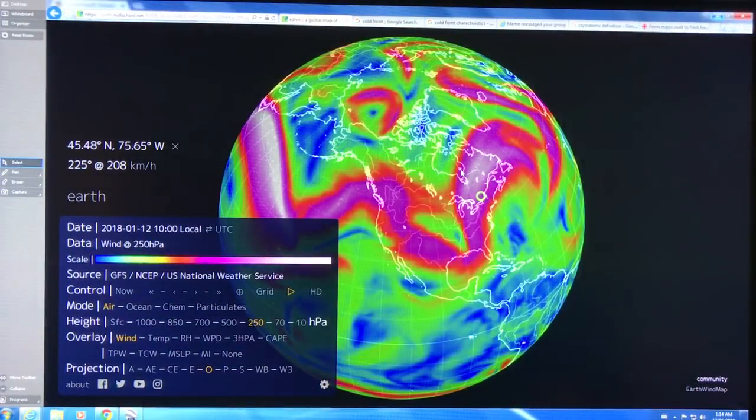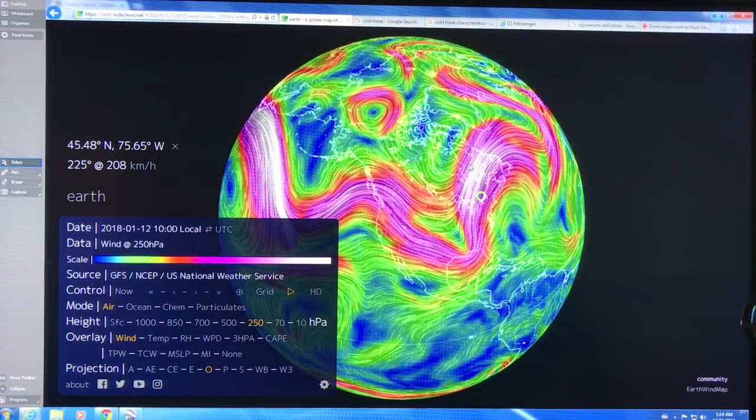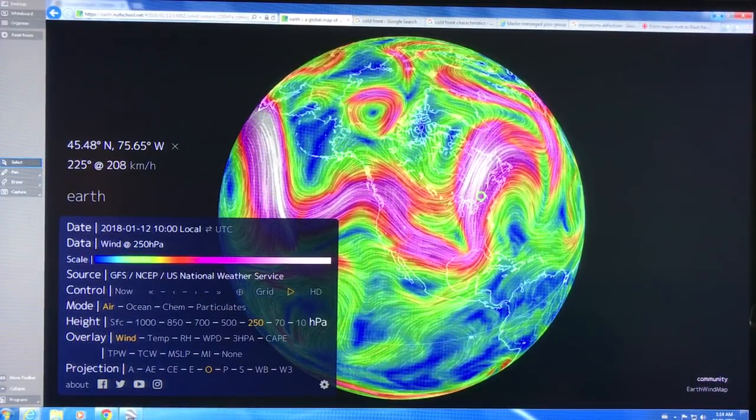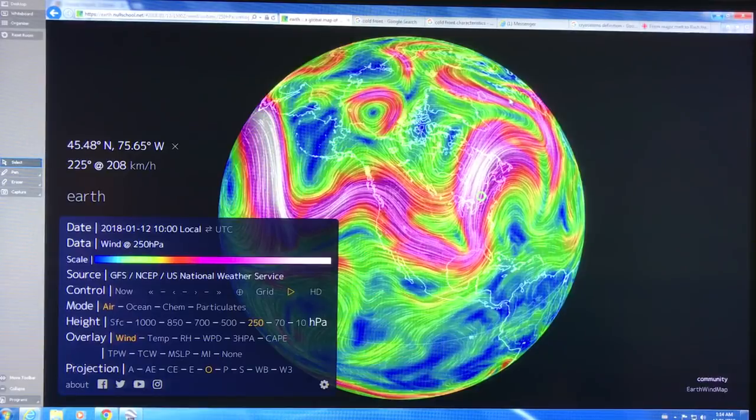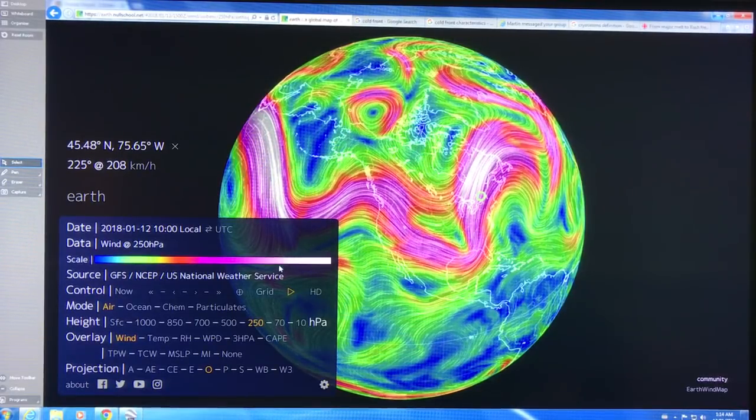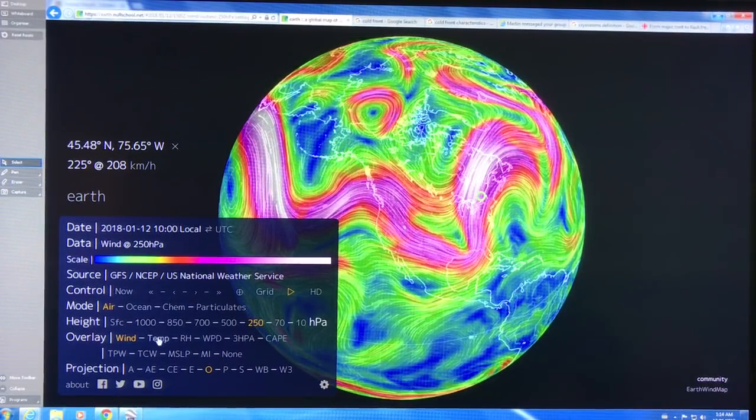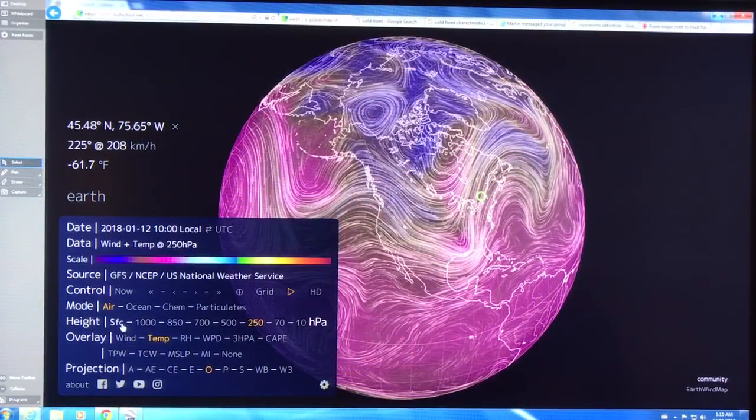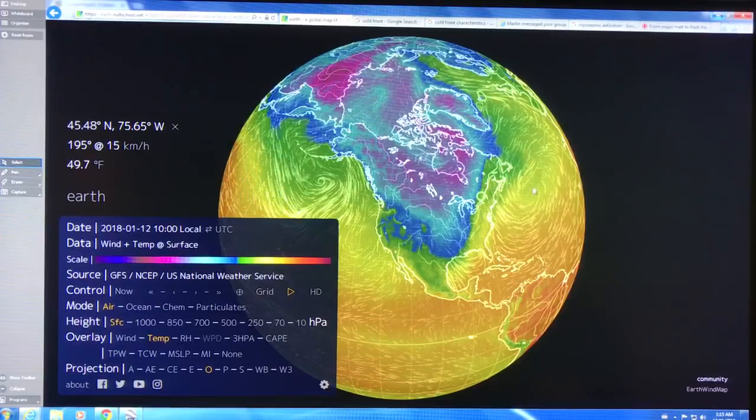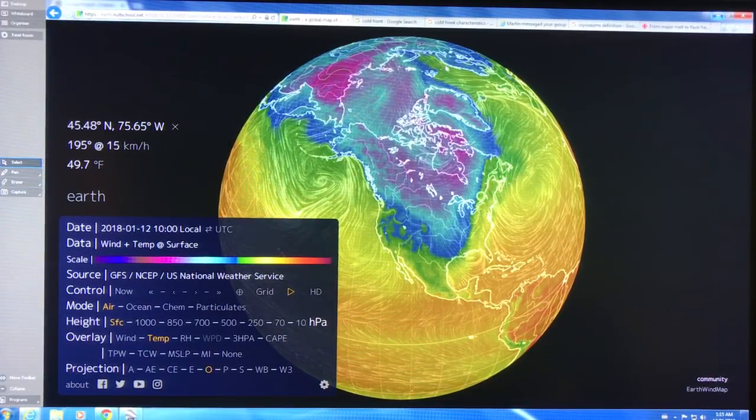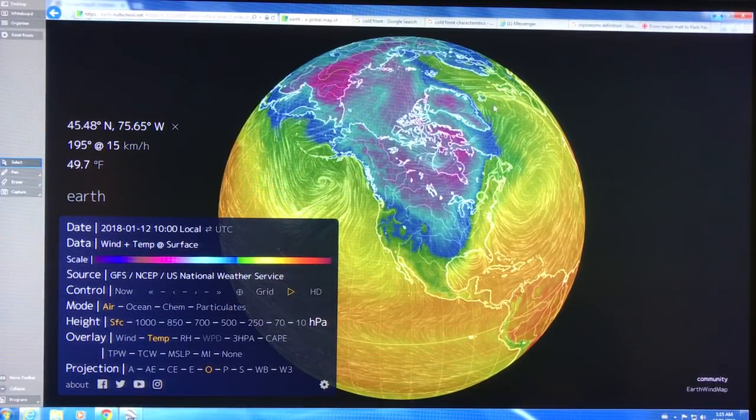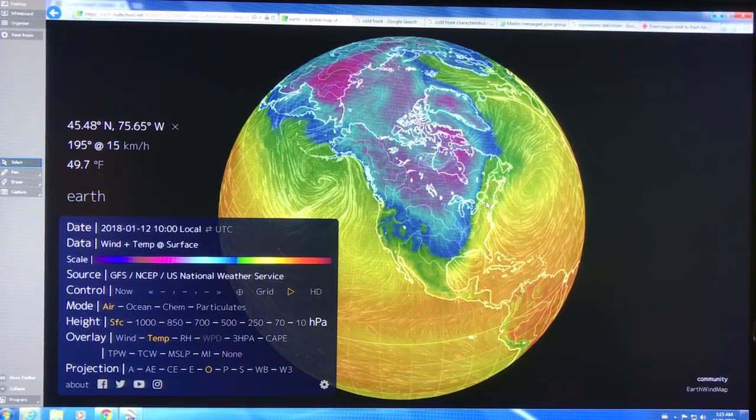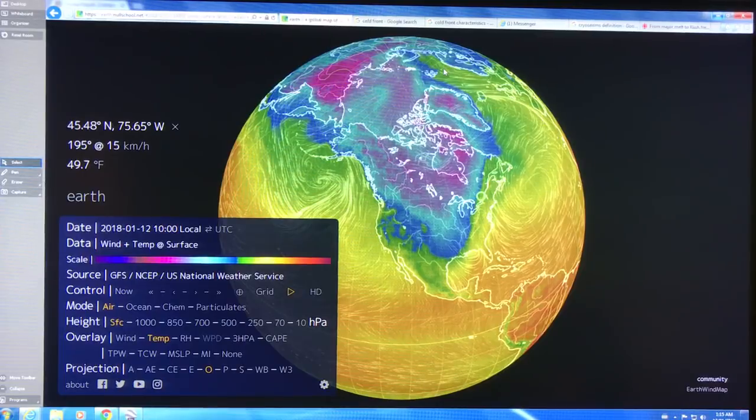If we expand this out, what you can see is there's warm air being brought right up into the high Arctic. We can go back to temperature and go back to the surface temperature. Very warm air above the freezing point is going right up into the Arctic. When this crosses Ottawa we're in a deep freeze, the Arctic is much warmer.